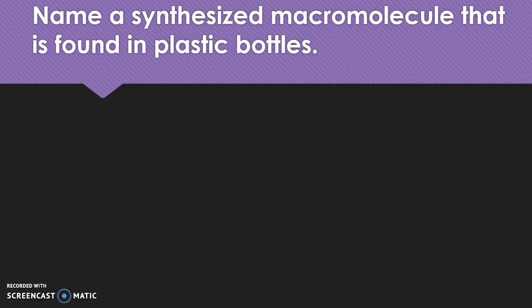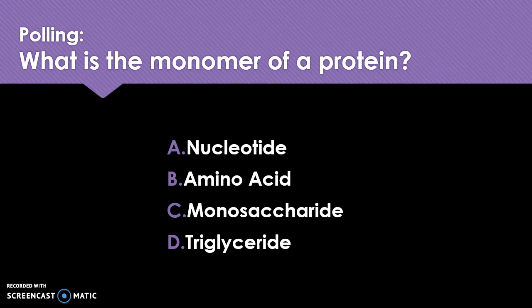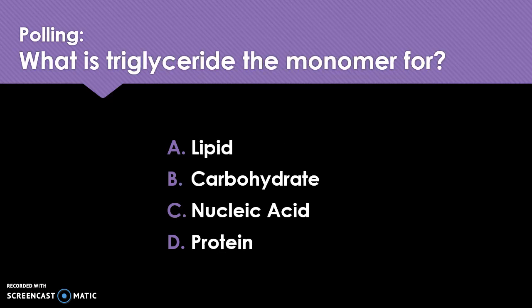Name a synthesized macromolecule that is found in plastic bottles. Which of the following best describes ethylene? What is a monomer of a protein? What is triglyceride the monomer for?